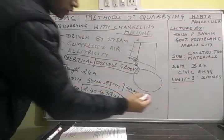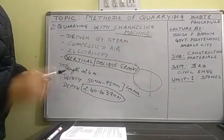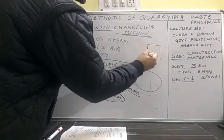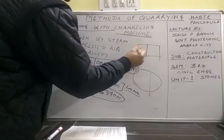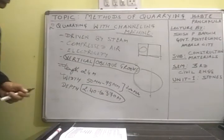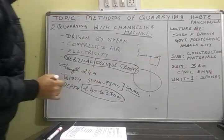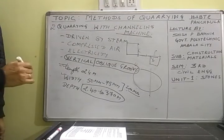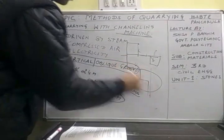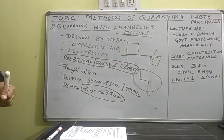If we talk about the cross-section, the surface is cut in this way. We cut the surface, then cut again, and this step formation is created as we continue cutting. This step formation is the result of the channeling process. This was all about the second method, which is quarrying with the channeling machine. Thank you.